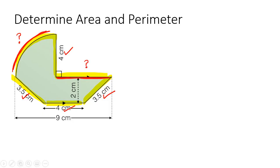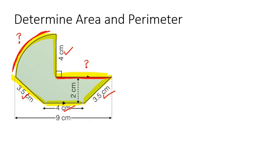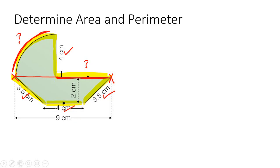Let's start with this one. They've told us that this entire length from here to here is 9. So that would be the same as going from here up to here — that would have to be the same as this one, so that would have to be 9.